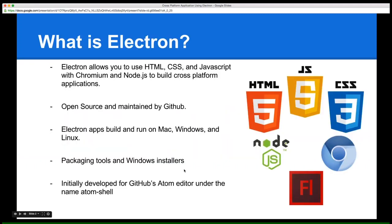What is Electron? Electron allows you to build cross-platform apps using Chromium and Node.js as your back-end server, and HTML, CSS, and JavaScript for your front-end rendering. It's open source and maintained by GitHub. Originally Electron was part of Atom Shell, the model for the Atom IDE. They open-sourced that piece and it grew into its own package. Electron apps can be built on Mac, Windows, and Linux, with packaging tools for binary executables and a Windows installer tool.